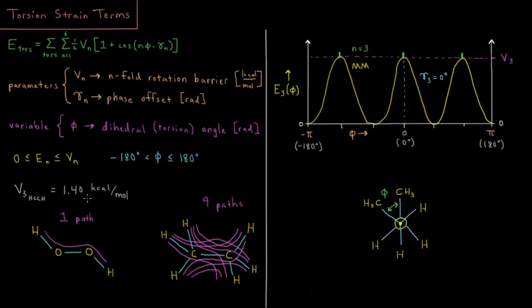And then the last thing we have to include here, which I haven't included in this term, is a correction for the number of distinct paths this torsion can have. So in something like hydrogen peroxide, there's only one path from end to end here, but in this ethane molecule, there are nine distinct torsions here which are really effectively the same torsion angle. So there's nine paths there and that gets corrected in our energy function as well.